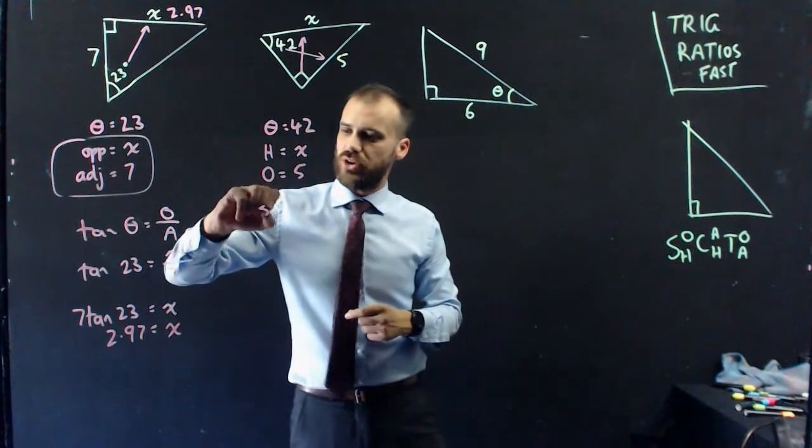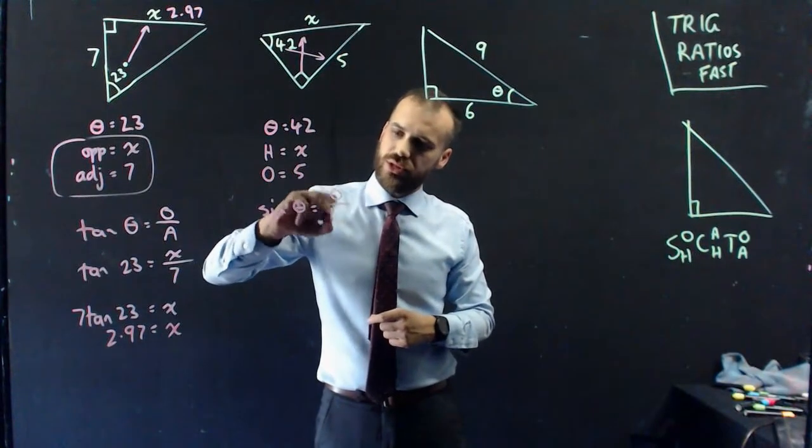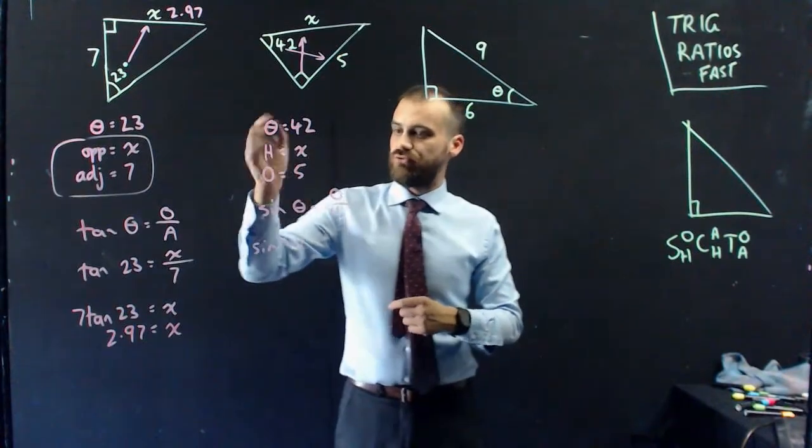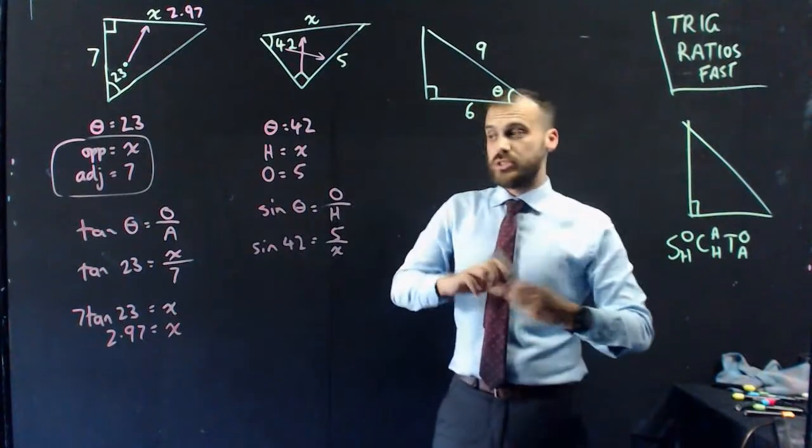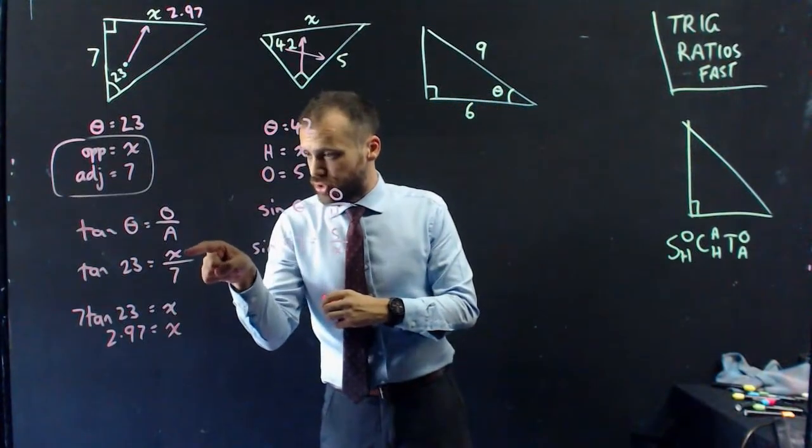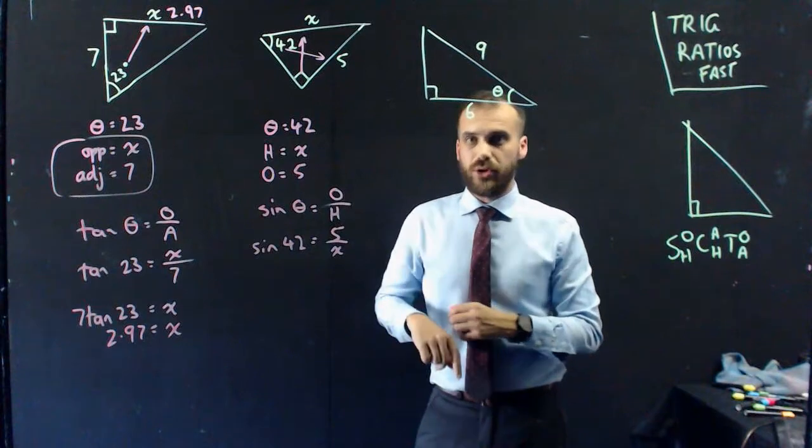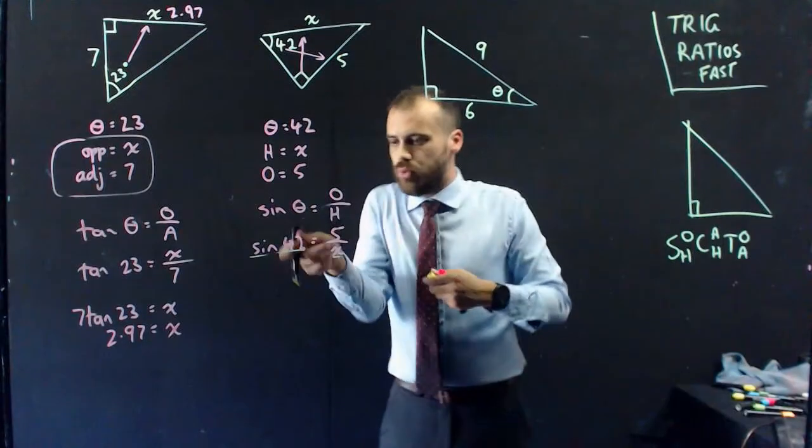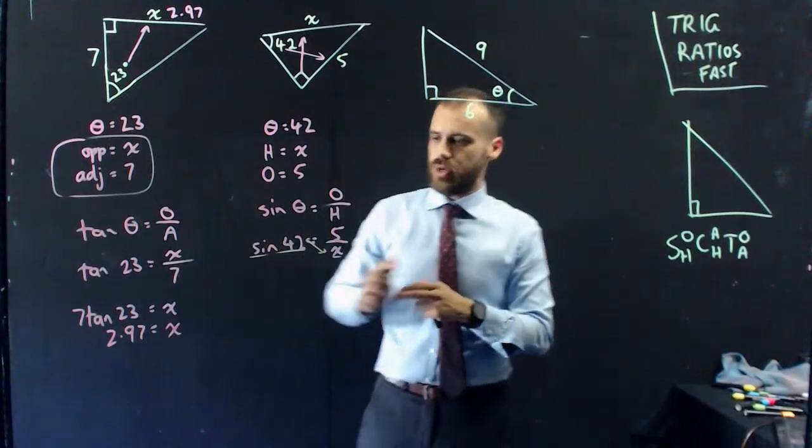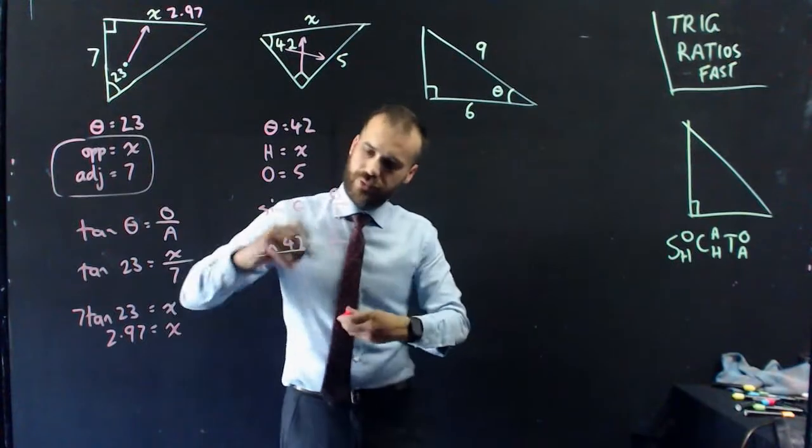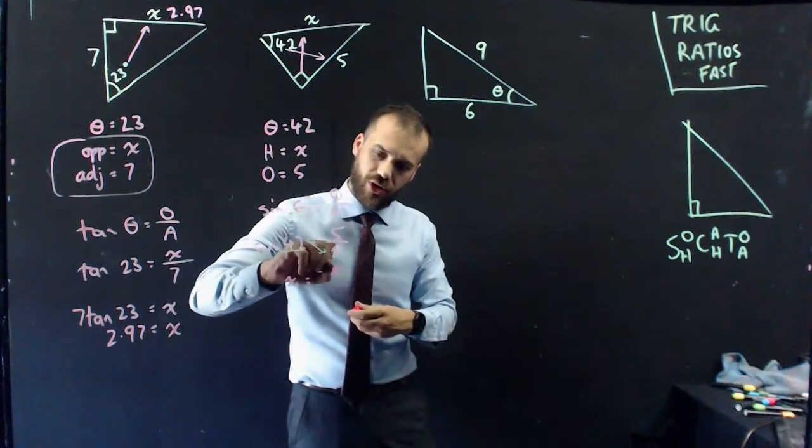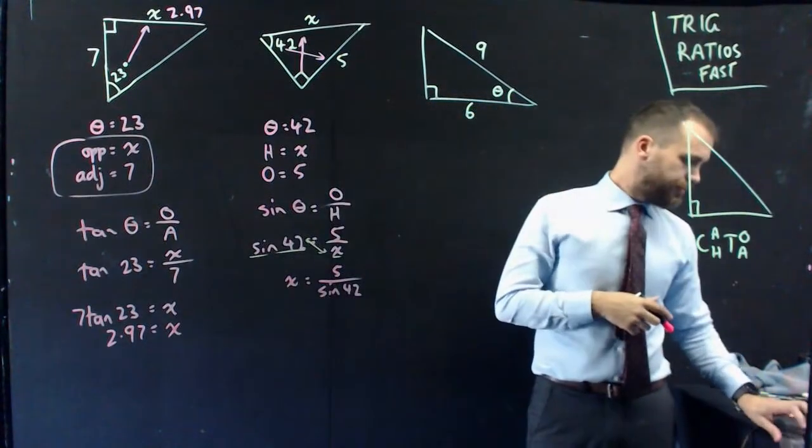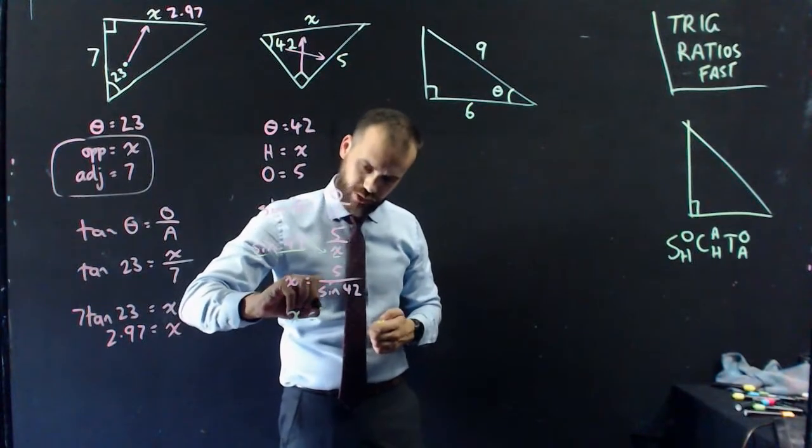This is a sine question. So sine theta equals opposite over hypotenuse. Sine 42 equals 5 over x. This question's different to the previous one, because the x was on the top here, the x is on the bottom here. We can just do a little bit of cross-multiplying by taking that and that and swapping them over, moving them diagonally. So now we can say that x equals 5 divided by sine 42. Calculate it in degrees mode. So x equals 7.47.